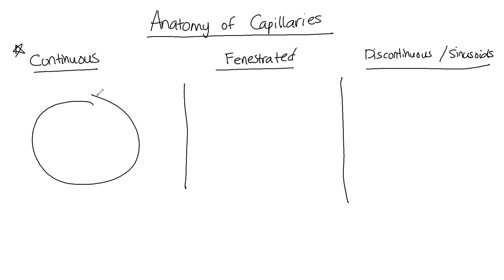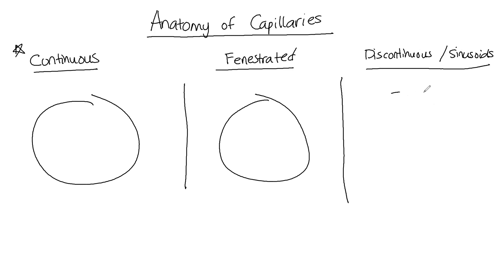So we've got a continuous capillary, a fenestrated capillary, and then discontinuous capillaries actually have openings in their basement membrane as well. It's not a continuous basement membrane the way that we see in the other types.